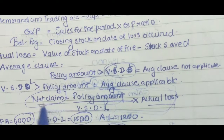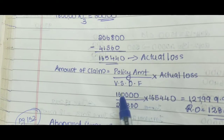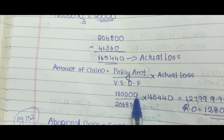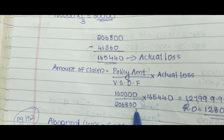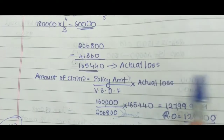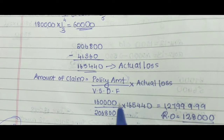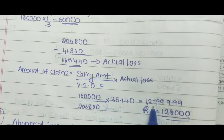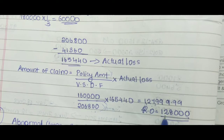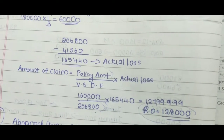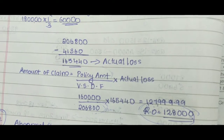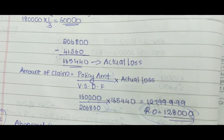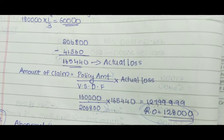Since average clause is applicable, the formula is: Net Claim = (Policy Amount ÷ Closing Stock) × Actual Loss. Policy amount = 1,60,000; closing stock = 2,06,800 (from the memorandum trading account); actual loss = 1,65,440 (closing stock minus stock salvage). Applying the formula we get approximately 1,27,999, which we round off to 1,28,000. This is the net claim amount, and this is the final answer. We found both the actual loss and the net claim as required.